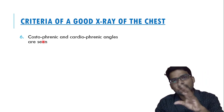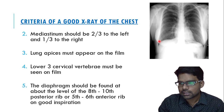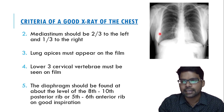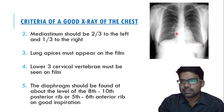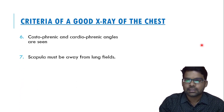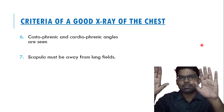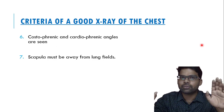The sixth point: both the costophrenic and cardiophrenic angles must be visible on the chest X-ray. The costophrenic angle is the angle between the ribs and the diaphragm - the right and left costophrenic angles should both be visible. The cardiophrenic angle is the angle between the heart border and the diaphragm. The seventh point: the scapula must be seen away from the lung fields on a PA film.